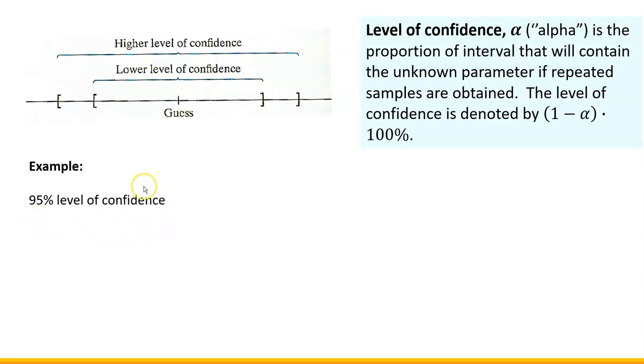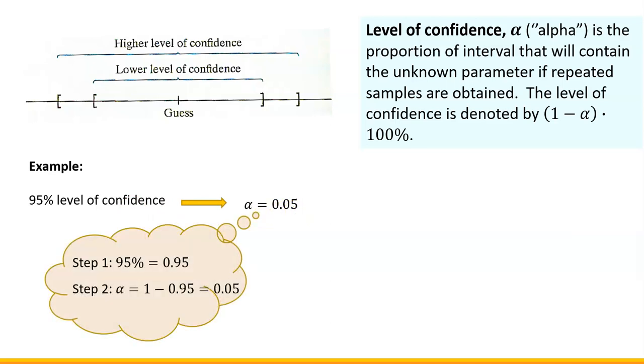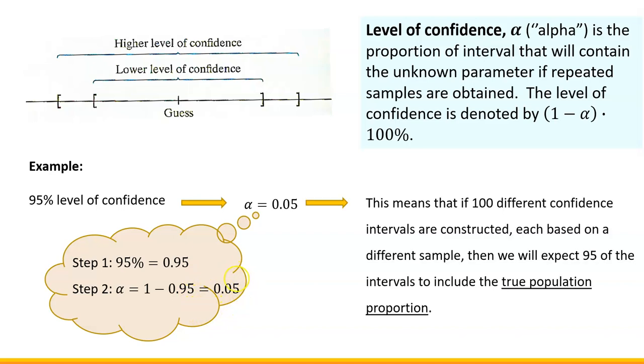Now this is how confidence interval is written in words, but what is the corresponding alpha value? For the corresponding alpha value for 95% level of confidence, it's actually 0.05. How do I get that number? Well we have to do two simple steps. First we need to change percentage to decimal and then we have to subtract that decimal from one. So this is how we're going to obtain the value of alpha. And once again this means that if 100 confidence intervals are constructed, each based on a different sample, then we will expect 95 of the intervals to include the true population proportion.